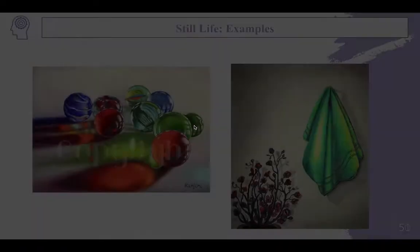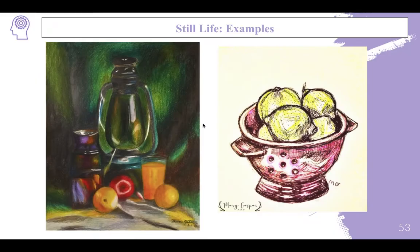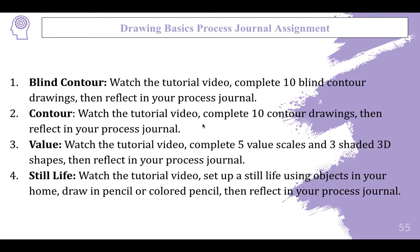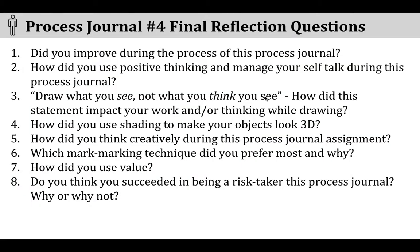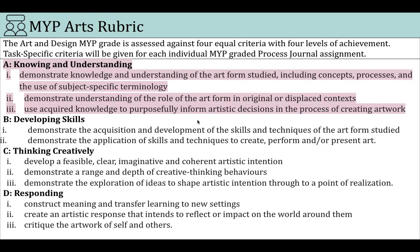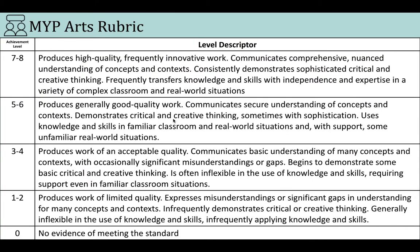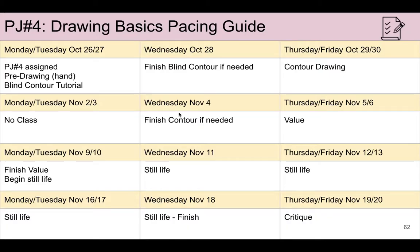The final part is the fun part — we get to put all these skills together and you'll create a small still life drawing. Here are the basic assignments broken down, and here's the summary — the final reflection you complete after the critique. This is the rubric and we're going to be grading Criterion Strand A: knowledge of the art form studied. You'll be collecting knowledge throughout.